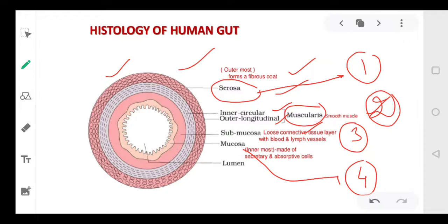Our alimentary canal basically has two main important parts, the small intestine and large intestine. And these two are mainly involved in the absorption process. That is why the innermost layer basically contains the secretory and absorptive cells. So in totality, the gut is surrounded by four layers of cells.